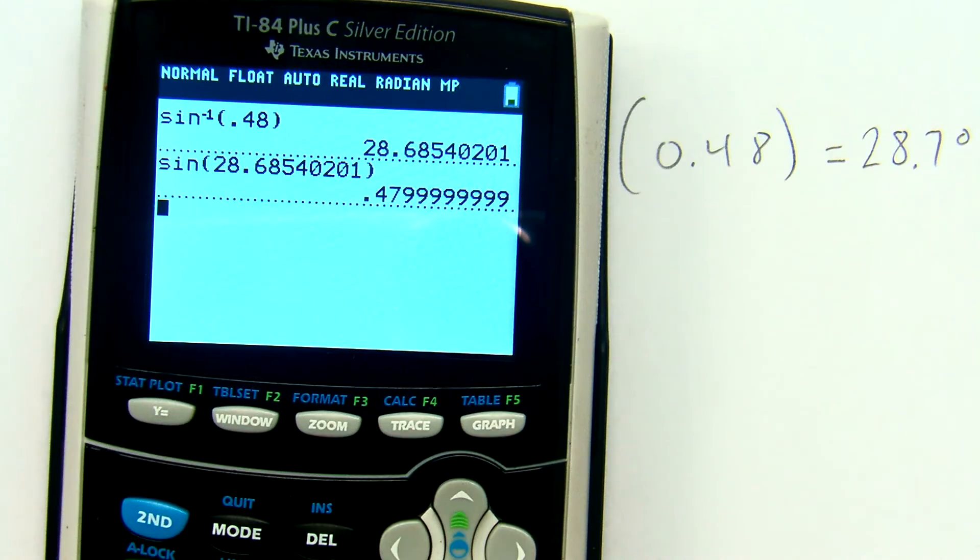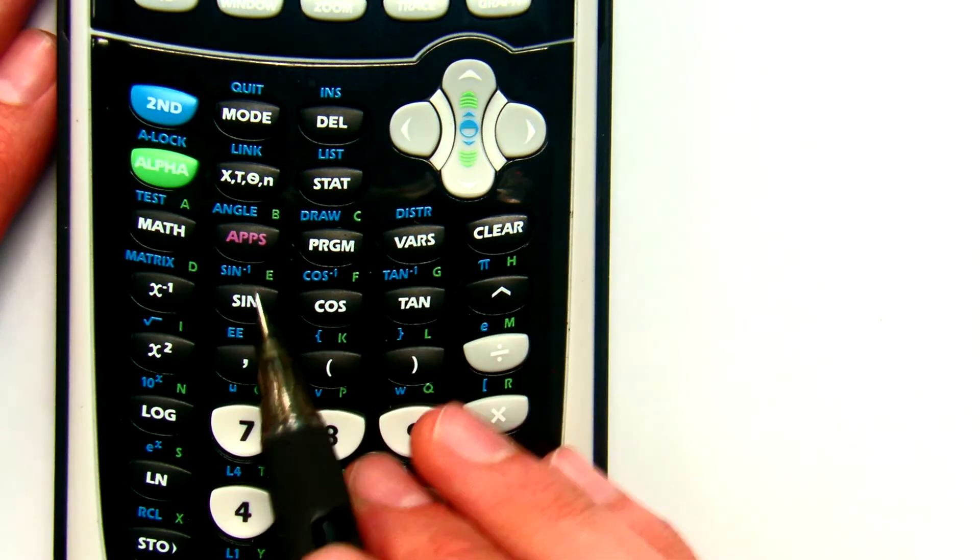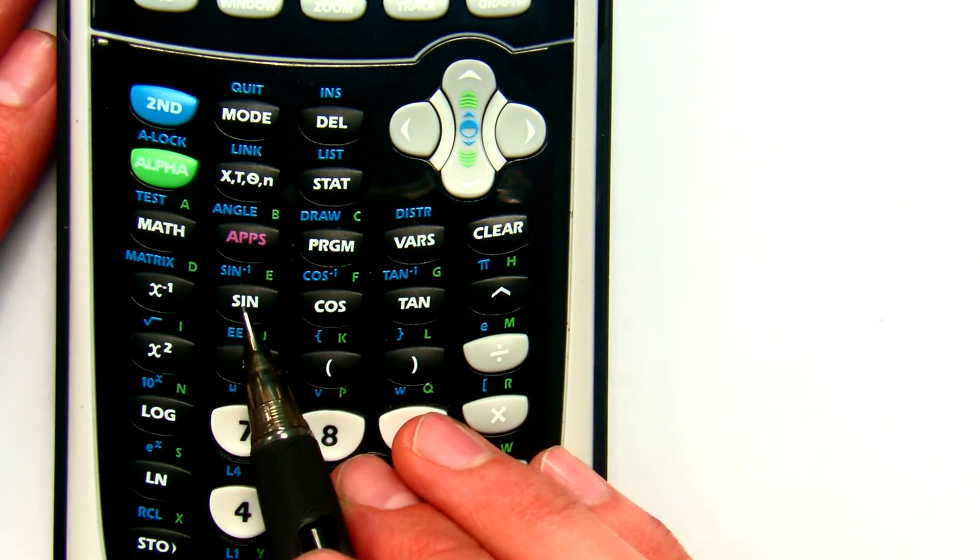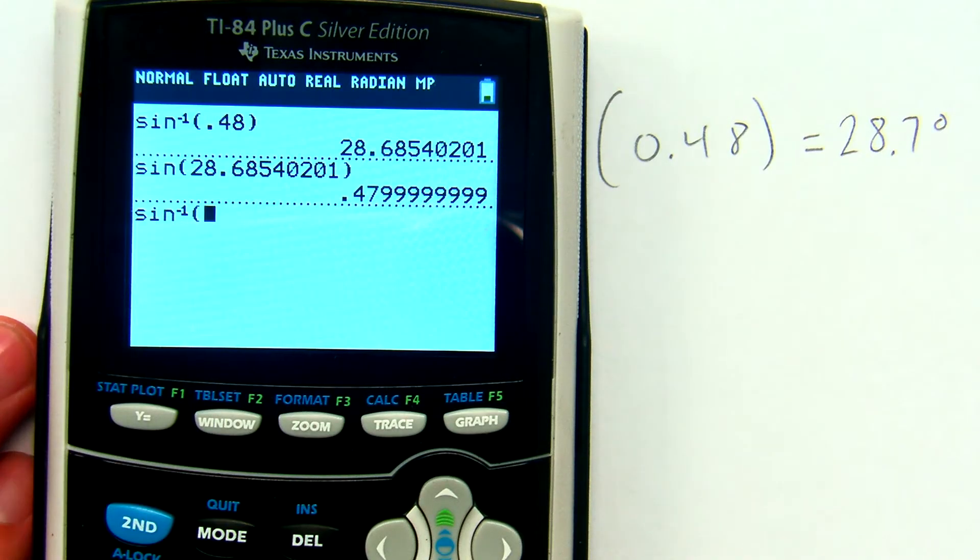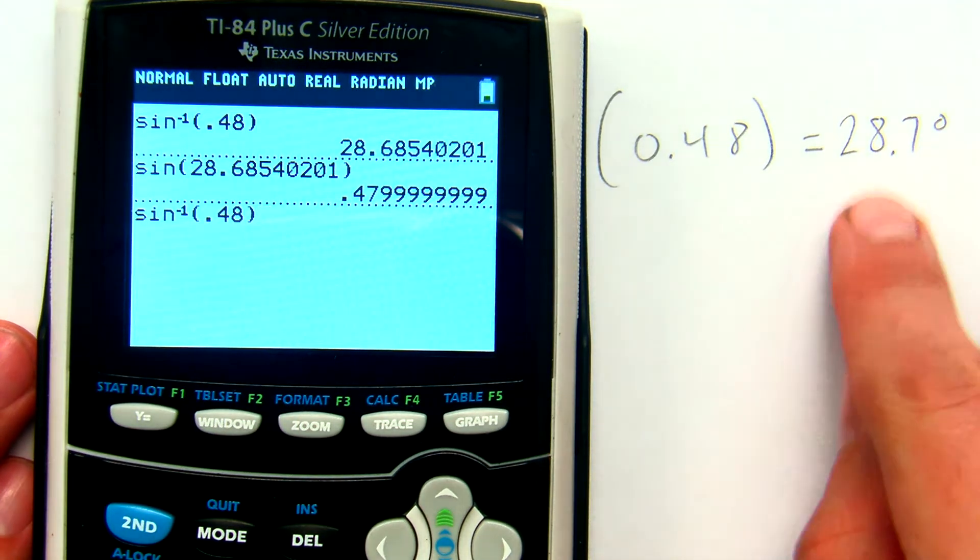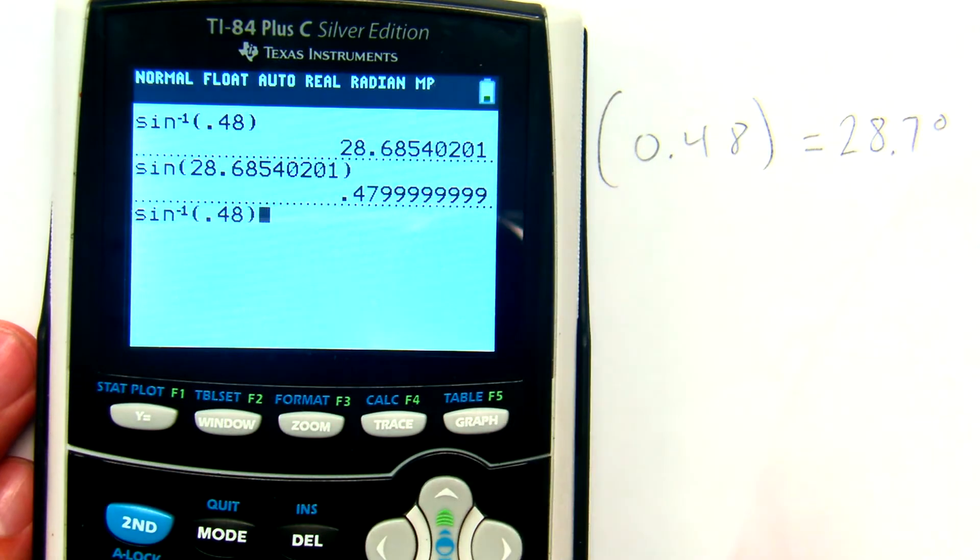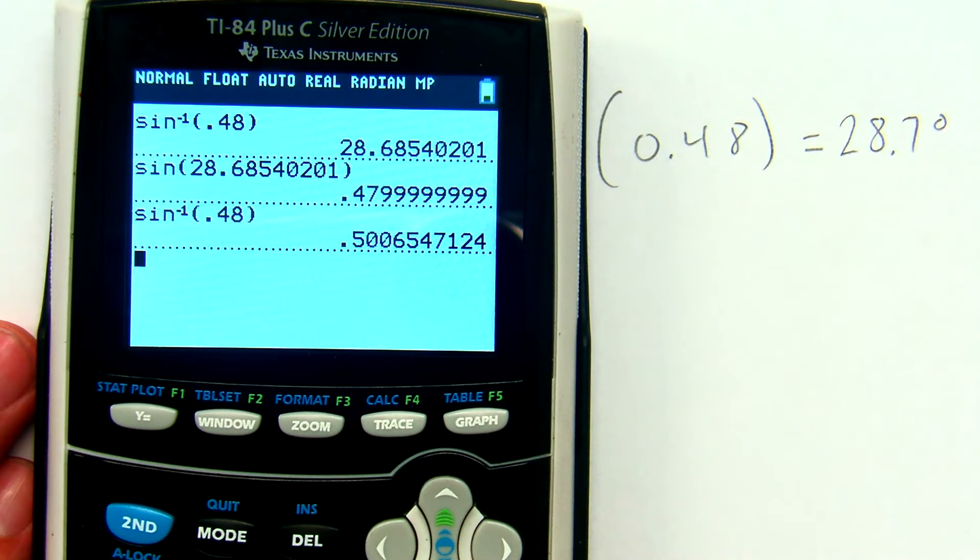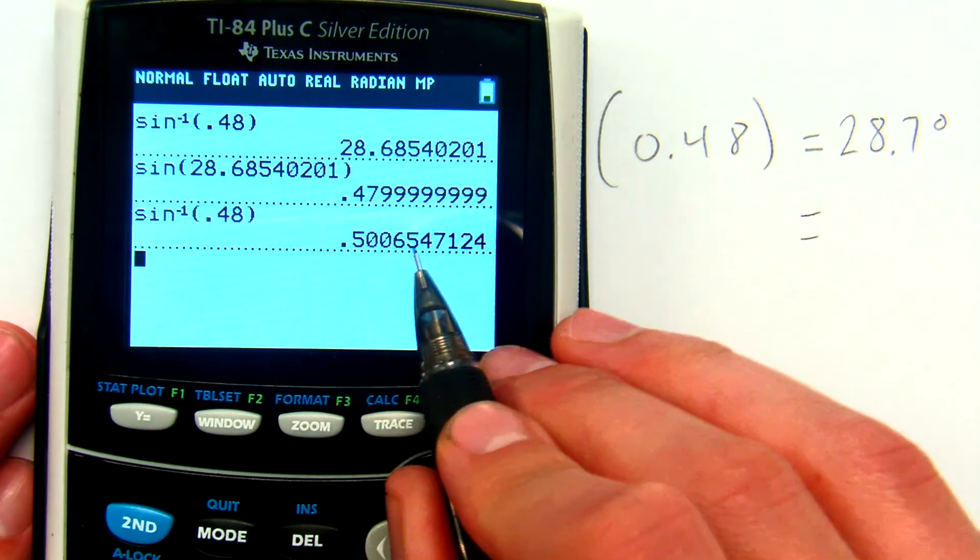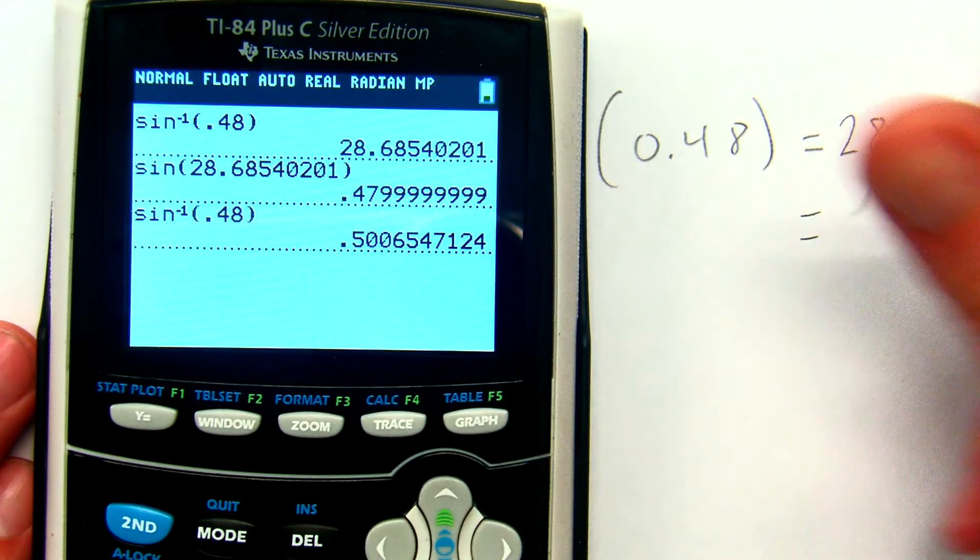Let's try it again in radians this time. So once again, I find my inverse sine. It's the second function of sine. Second sine gives me inverse sine of 0.48. Now this time, my answer won't be in radians, it'll be in degrees. Or, let me say that again, it won't be in degrees, it'll be in radians. 0.500654 radians. Again, let's just round to the nearest hundredth here, so 0.50 radians.